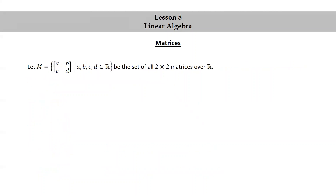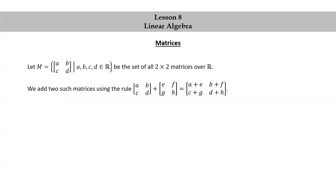Let M equal the set of matrices [A, B; C, D] where A, B, C, and D are real numbers — the set of all 2x2 matrices over R. We add two such matrices using the rule: [A, B; C, D] + [E, F; G, H] = [A+E, B+F; C+G, D+H].